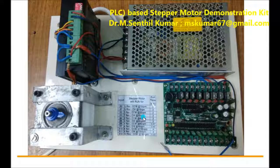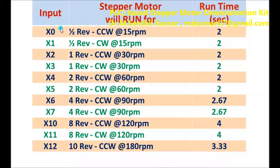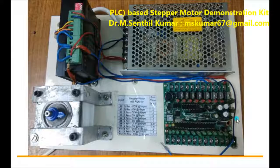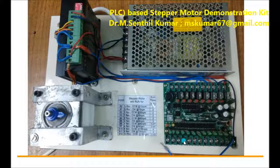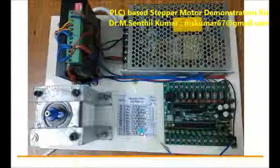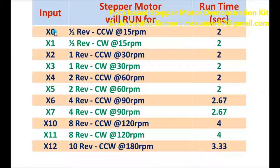I provided a chart here. This board has 8 plus 8, 16 inputs: X0, X1, X2, X3, X4, X5, X6, X7, X10, X11, X12, and X13. If you press X0, the stepper motor will rotate only half a revolution in the counterclockwise direction at 15 RPM — it will take two seconds to complete.